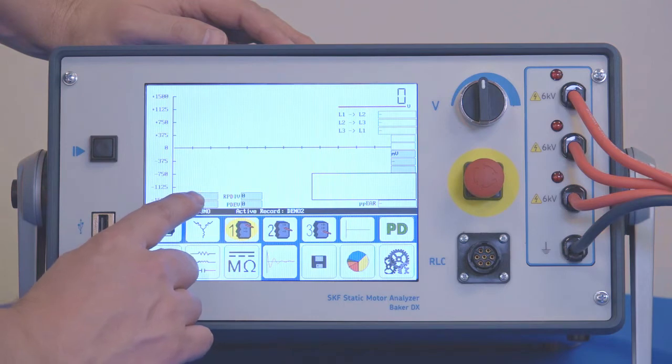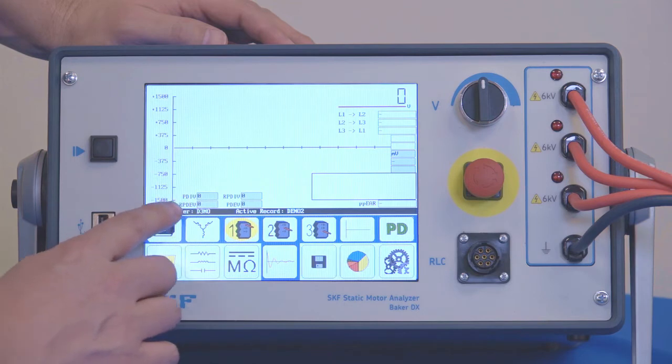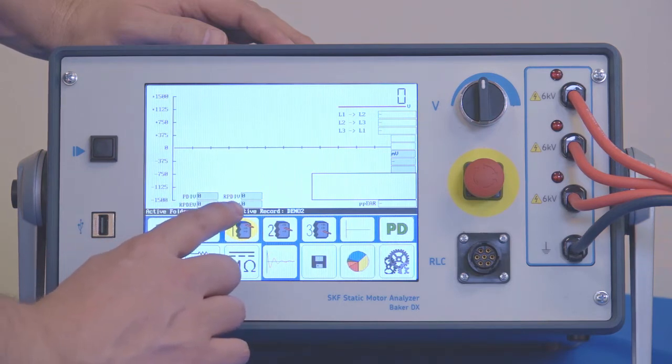These boxes are for partial discharge inception voltage, repetitive partial discharge inception voltage, repetitive partial discharge extinguish voltage, and partial discharge extinguish voltage.